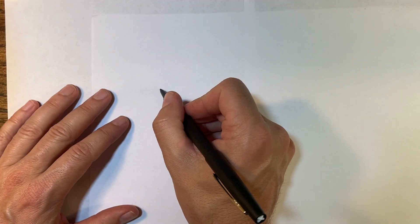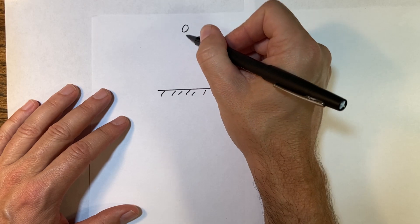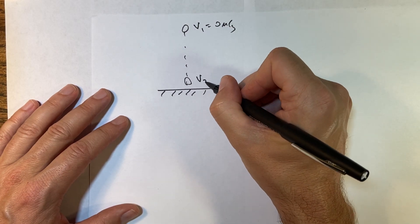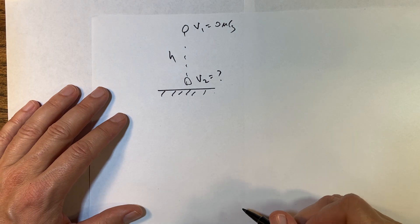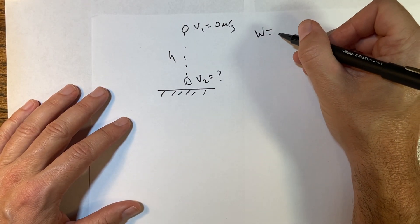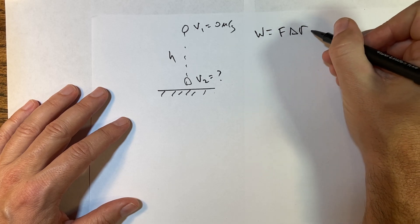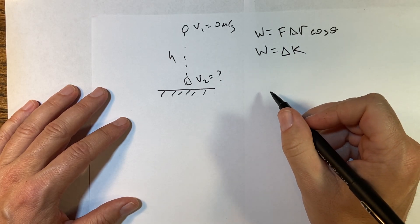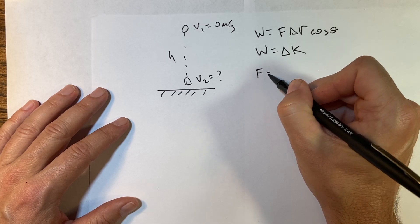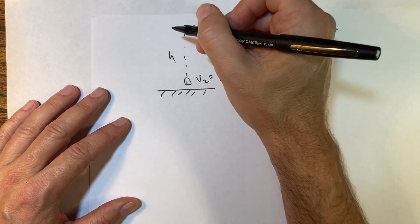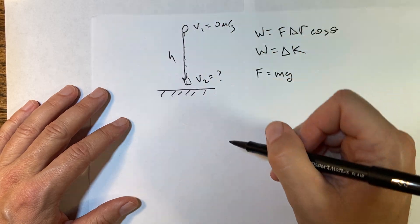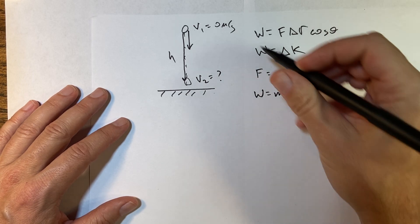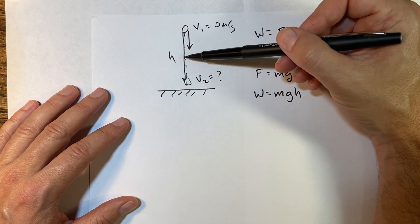Okay, let's do it again. Okay, so now here I have my ball. I gotta draw the same picture again. This is v1 equals zero meters per second, v2 I don't know, that's h. Okay, so I'm going to say work is F delta r cosine theta, and then work is a change in kinetic energy. So let's find the work. I know the force is mg, I know delta r is this way in the same direction as the force, so the work is going to be mgh.